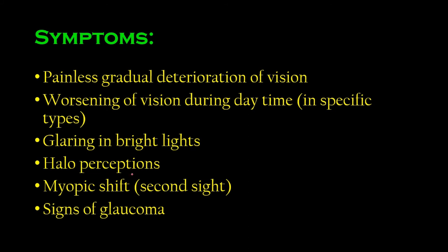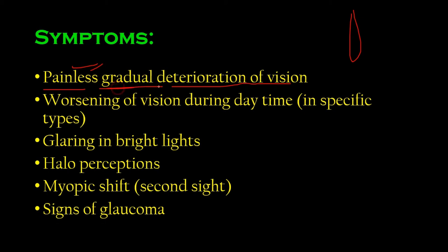Symptoms of cataract: with an opaque lens you get deterioration and loss of vision, which is painless and gradual. It's important to remember it's painless — certain other conditions cause painful loss of vision, which is something quite different. This loss of vision is very slow and takes time.